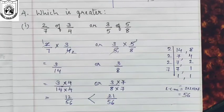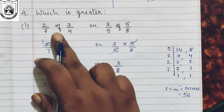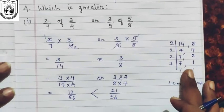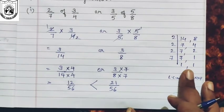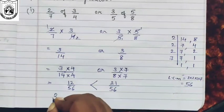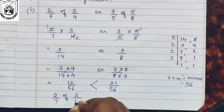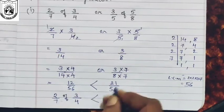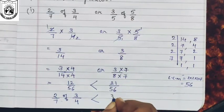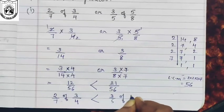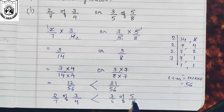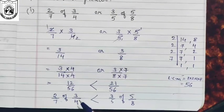So we put the inequality sign accordingly. We can say two-seventh of three-fourth is less than three-fifth of five-eighth, or equivalently, three-fifth of five-eighth is greater compared to two-seventh of three-fourth.